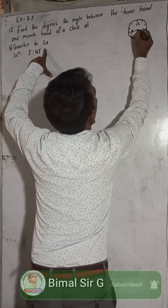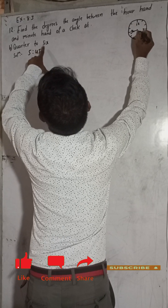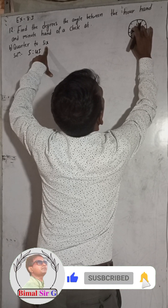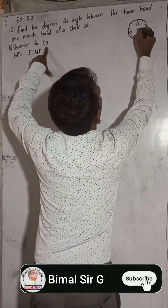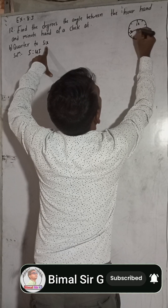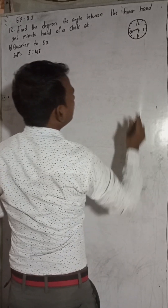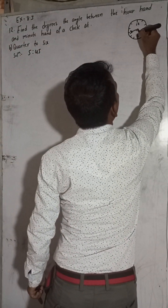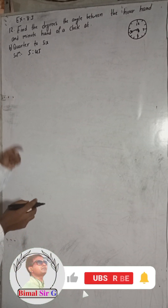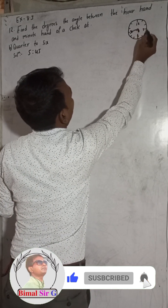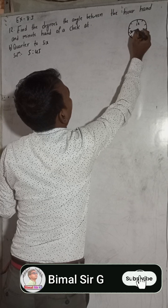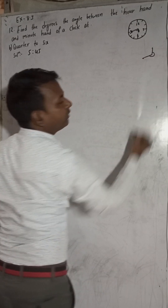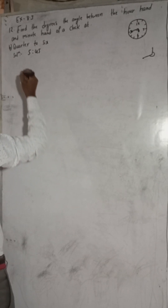At 45 minutes, the minute hand is at 9 and the hour hand is between 5 and 6. This is the minute hand and this is the hour hand. We have to find the angle between them. First, I will find the angle made by the minute hand — from 12 all the way to 9, going clockwise. Suppose 12 is here and this is the minute hand, so this is the total angle we will find first.